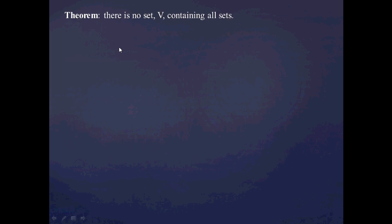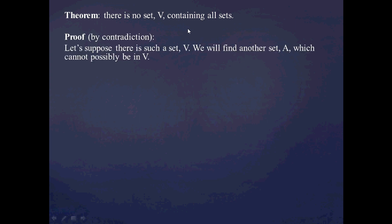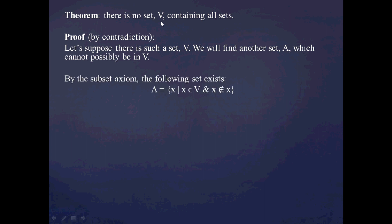Here is my first argument against such a set V — and this is actually a theorem in ZFC: there is no set V containing all sets. The proof is by contradiction. We suppose V exists and contains all sets, then construct another set A which cannot be in V. By the subset axiom, define A as all objects X such that X is in V and X is not a member of itself.